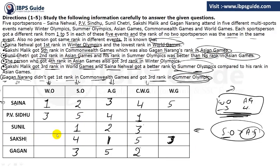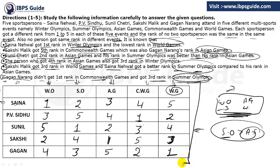In Sakshi's whole row, we have 1, 4, 5, and 3, so rank 2 must go in the remaining cell. In PV Sindhu's row, we have 1, 3, 4, and 5, so rank 2 must go there as well. In the World Games column, we have 1 and 4 remaining. Rank 1 can't go in one row since it's already there, so rank 1 goes in the other cell and rank 4 fills the last. If 4 is there, we're left with 5 and 4 in the final cells respectively. That completes the formation — this is just the basic logic of Sudoku: no same number in any row or column.